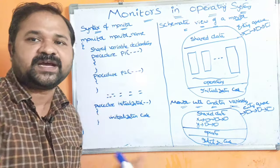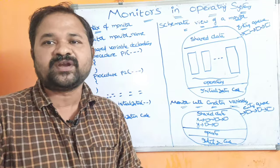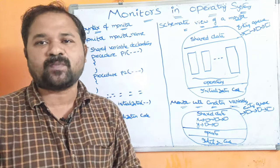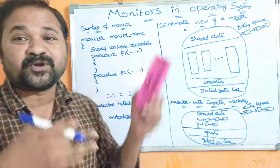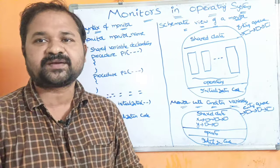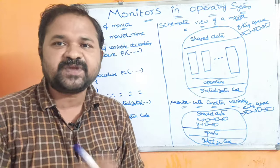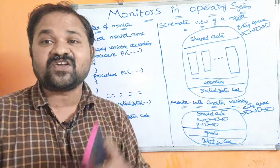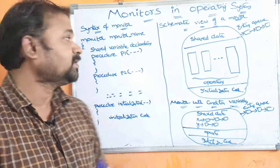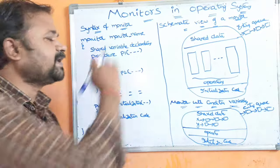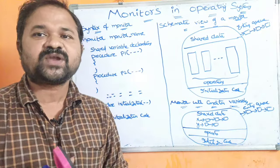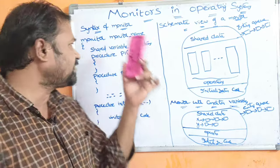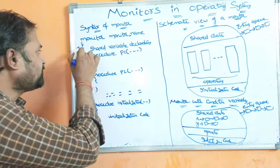For example, if we are defining the monitor for the producer-consumer problem, then the monitor name may be 'producer consumer'. If we want to define a monitor for the dining philosopher problem, then the monitor name may be 'dining philosopher'. So according to our requirement, we can give the monitor name.